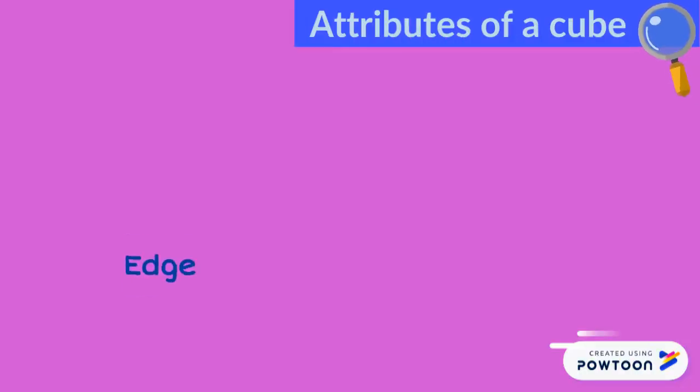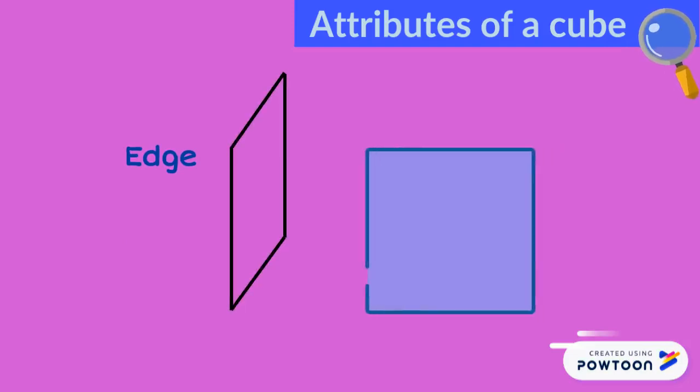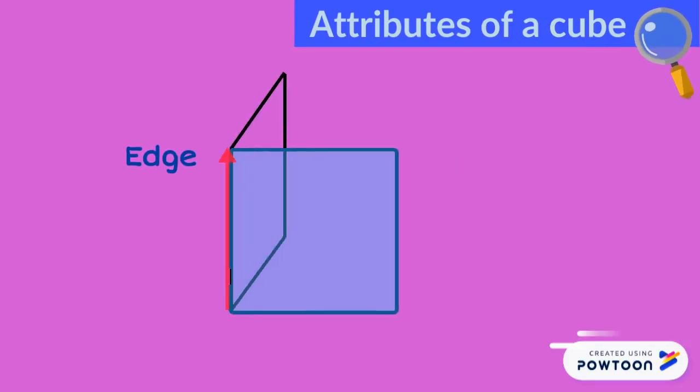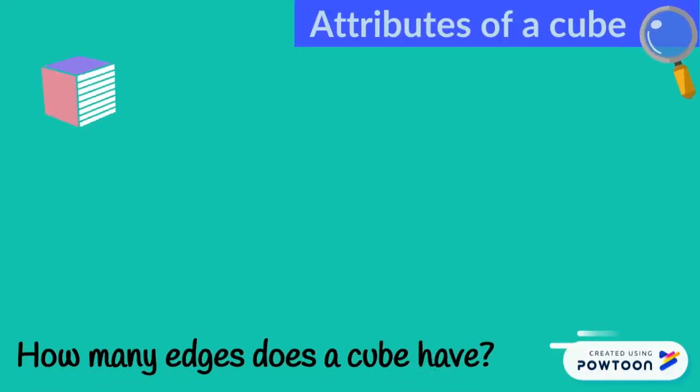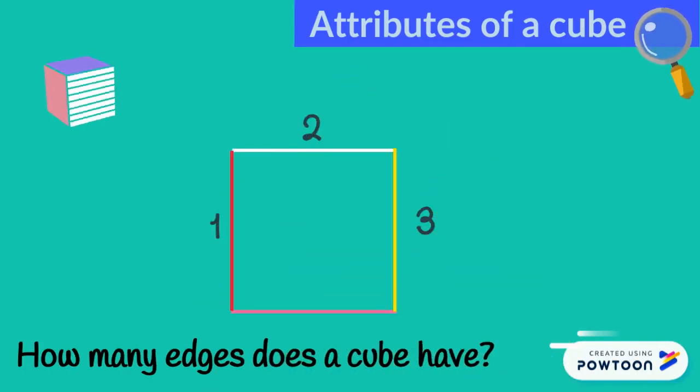The second one is the edge. The edge of a 3D shape is the line where two of its surfaces meet. How many edges does a cube have? Let's count the edges at the front. One, two, three, four.